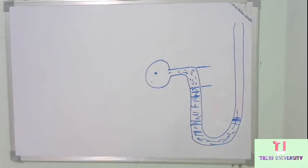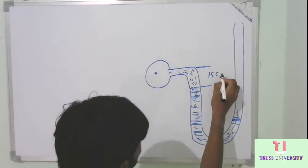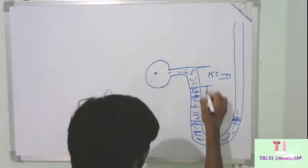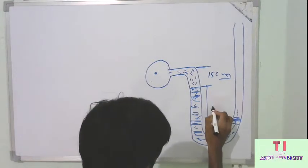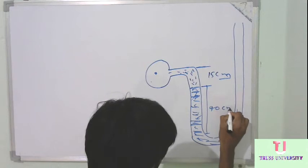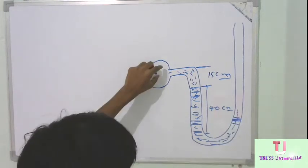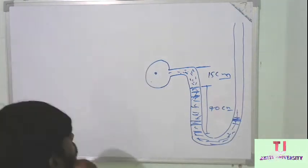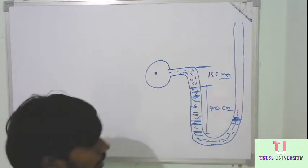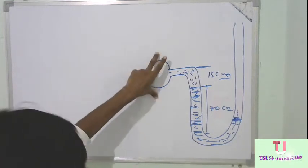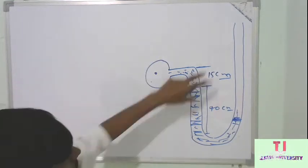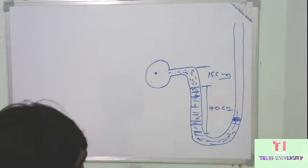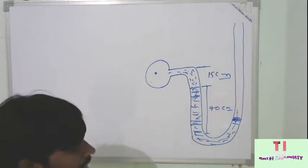So this is given at 15, and that is 15 cm, and this is 40 cm. Now we have to calculate the vacuum pressure. Really, we have not to discuss, all measurements that is done by the manometer is atmospheric pressure is not calculated, and hence we are calculating the gauge pressure.